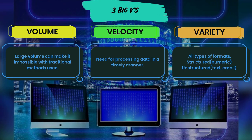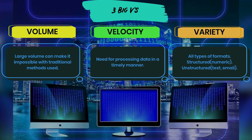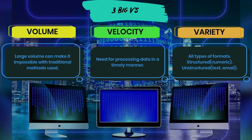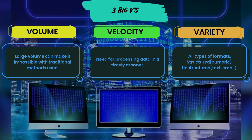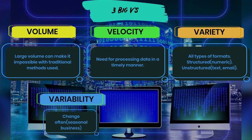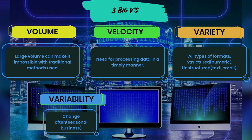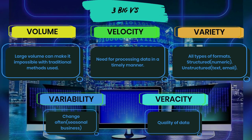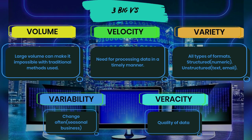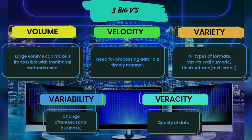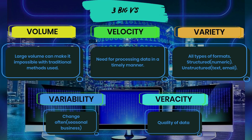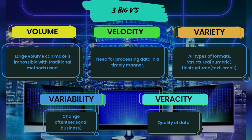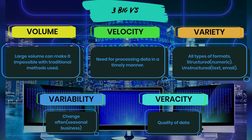Some experts consider two additional big data terms. The first is variability — for some businesses, data flows are unpredictable; they change often and vary greatly, as with a seasonal business. Finally, there's veracity, which simply refers to the quality of data. Not all data is equal. Data coming from different sources makes it difficult to link, match, cleanse, and transform data across systems. Without knowing how to connect and correlate relationships between different data sources and figure out how data is truly linked, it's not very high quality data.